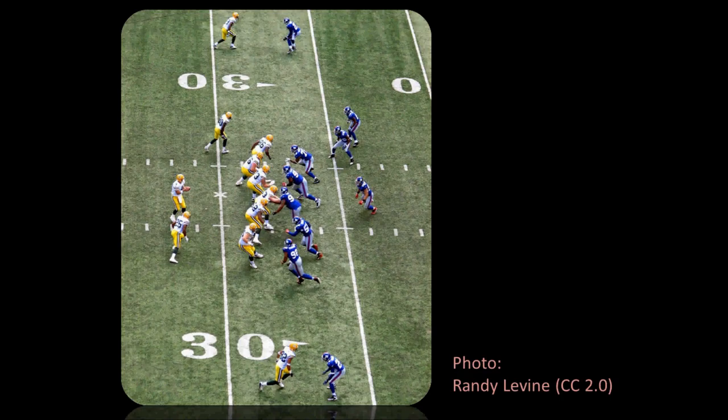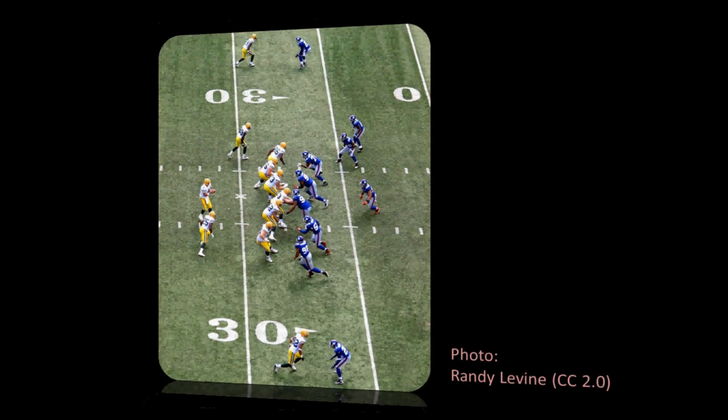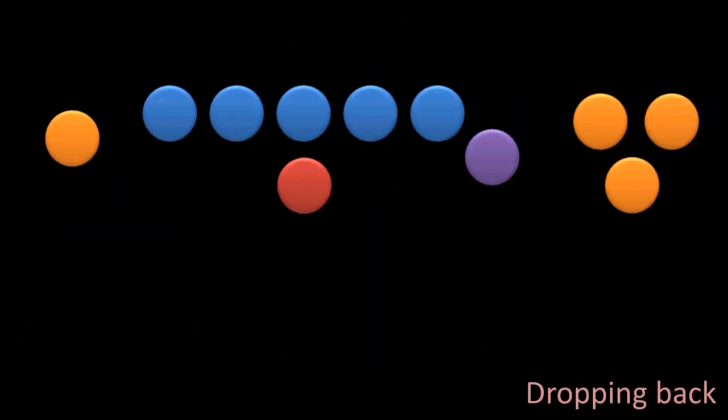If the quarterback is under center, he will get the ball from the center and he'll take a few steps backward really quickly, which we would call dropping back. And so he could take a three-step or a five-step drop depending on how quickly he wants to throw the ball.